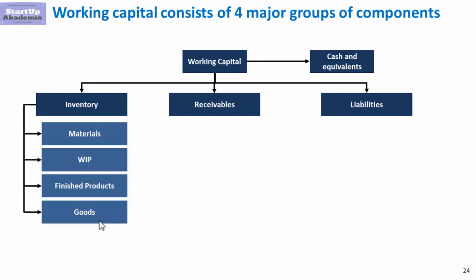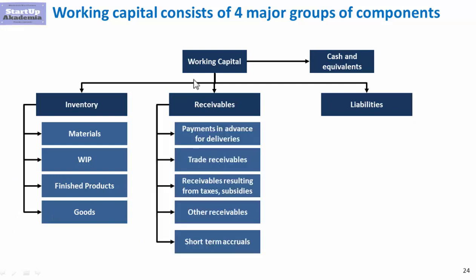Inventory can be divided into four subgroups: inventory of materials, work in progress, finished products, and goods that we trade. In the receivables, we have payments in advance that we have paid and are waiting for delivery, then the biggest position which is usually trade receivables, receivables resulting from taxes and subsidies, other receivables, and short-term accruals.